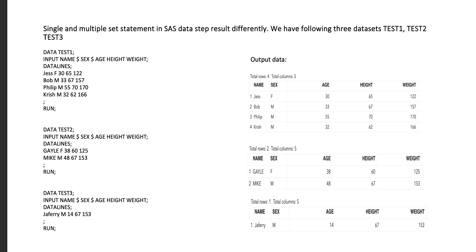Test one has four rows, test two has two rows, and test three has one row. When we run the first program, we obtain the result shown on the right side of the window. When we run the second program, the test two output is shown on the right. When we run the test three program, we obtain the result shown on the right side of the window.